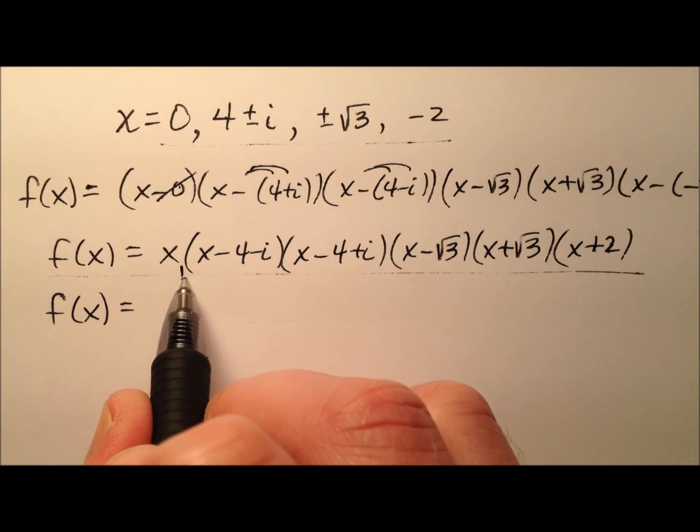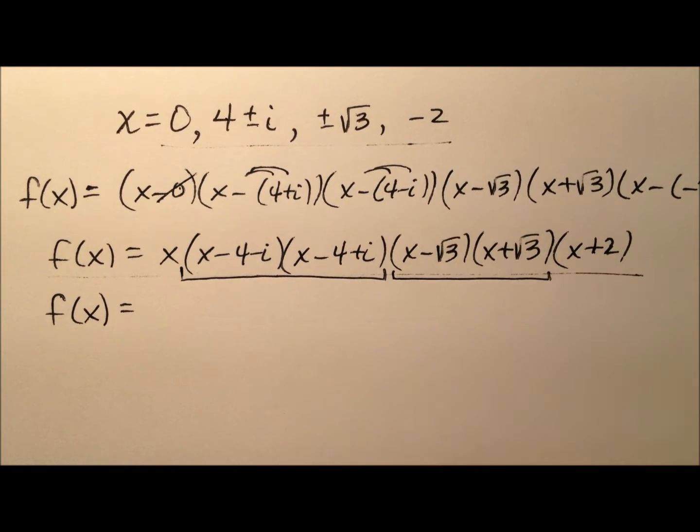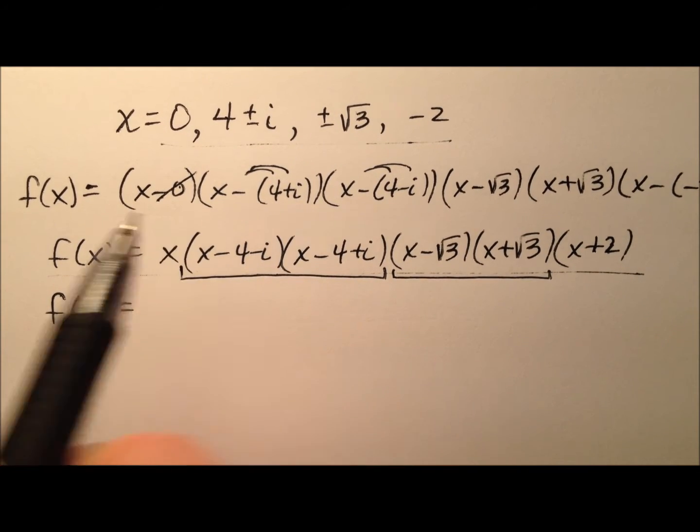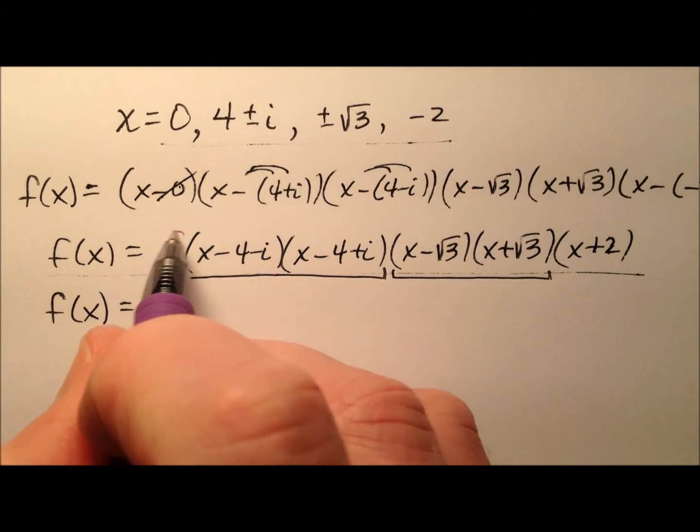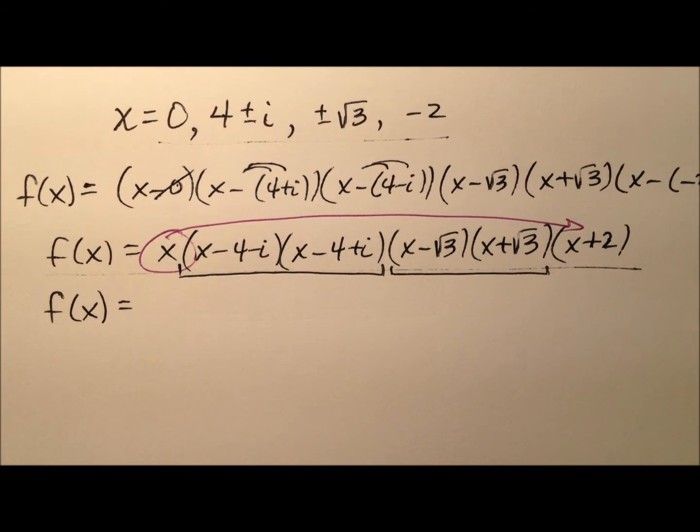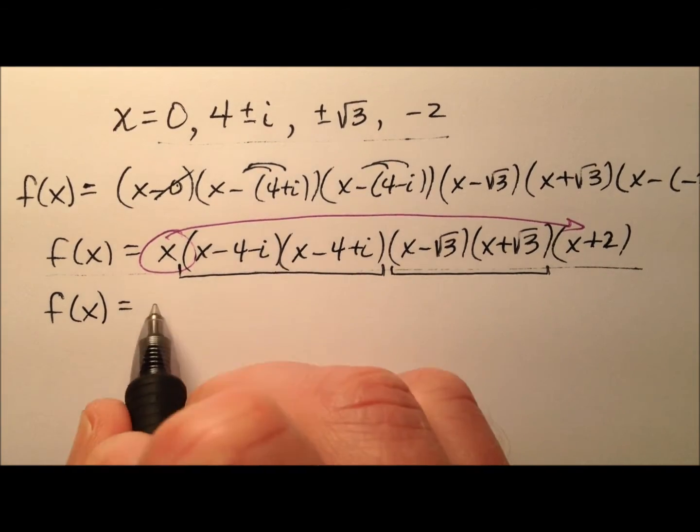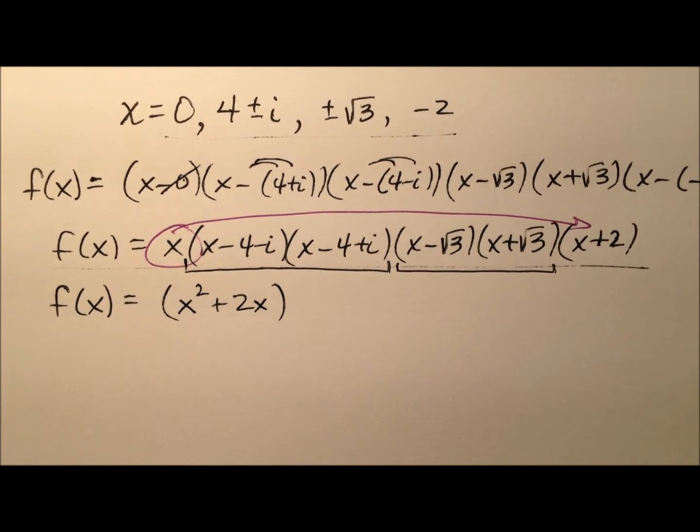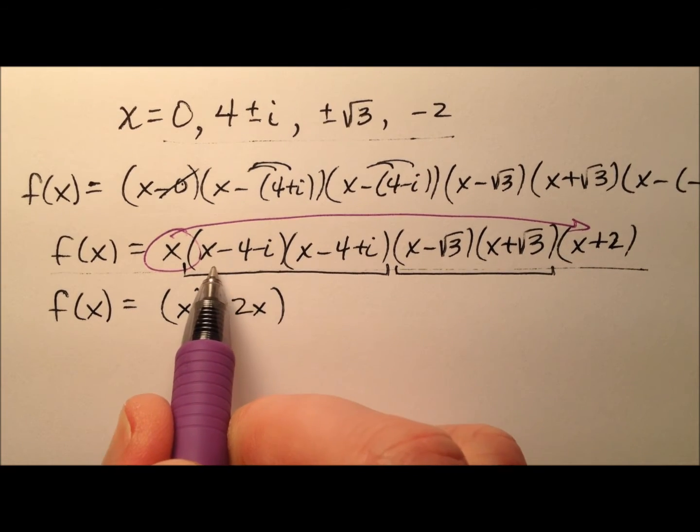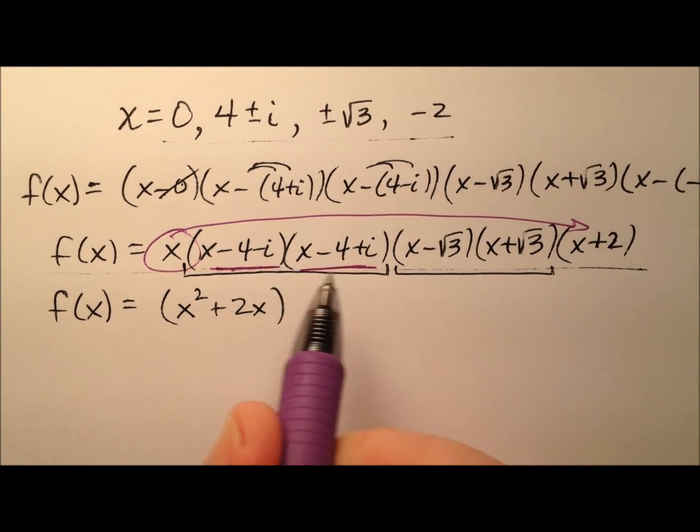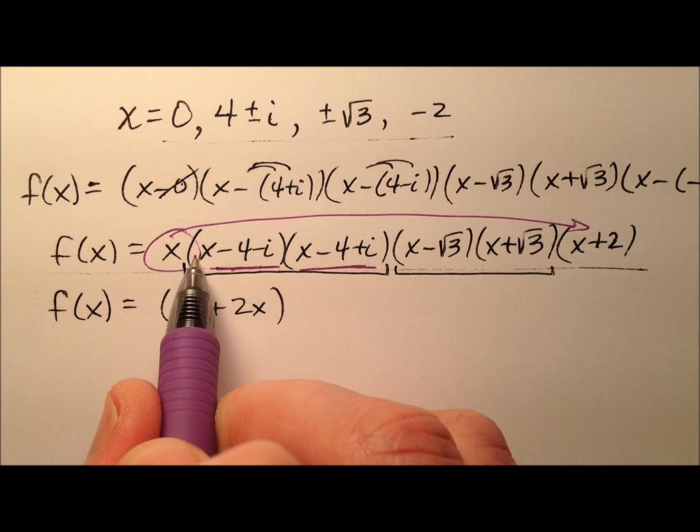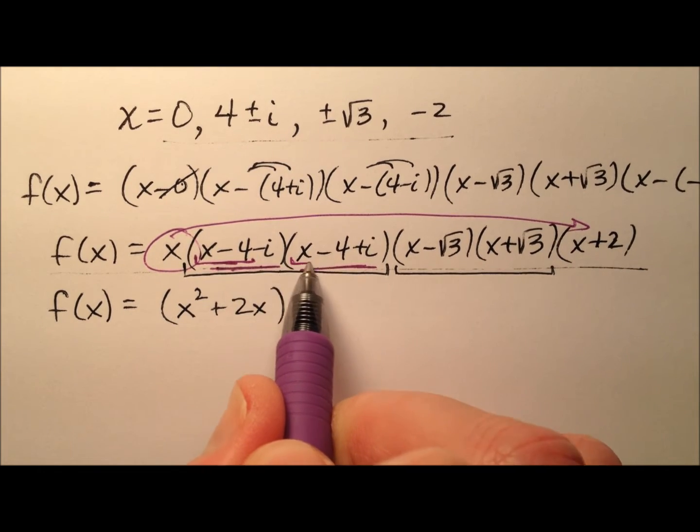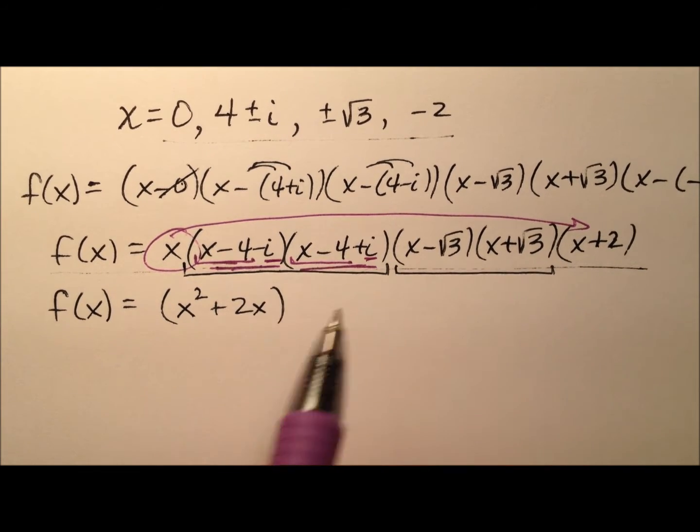Okay, well it's not as bad as it looks because I have a lot of nice multiplications going on. So first of all, I'm going to take this x and I'm going to run it through the x plus 2 there and I'm going to end up with x squared plus 2x. And then you can see that these two, this multiplication here is really a difference of squares.